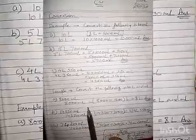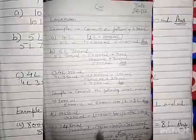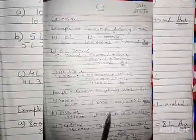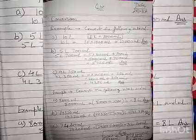Okay, clear hai? 8000 milliliter ko litre me change karne ke liye 8000 divided by 1000, answer 8 litre. Okay, now